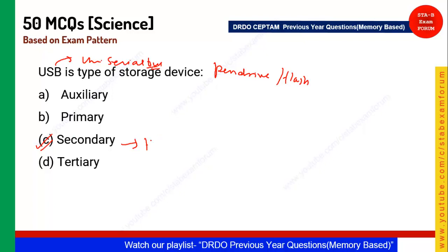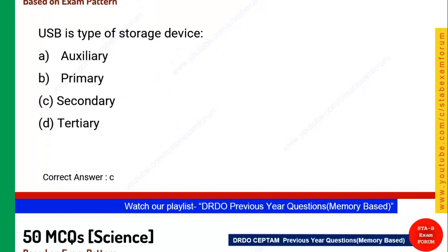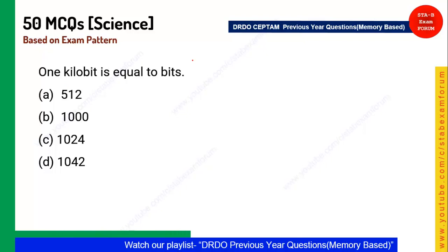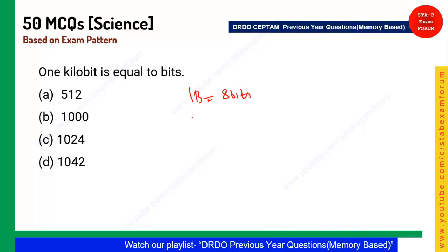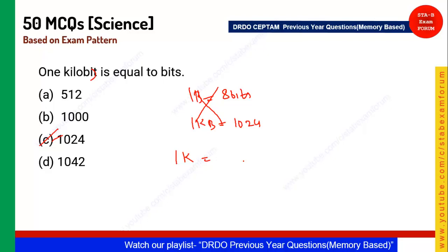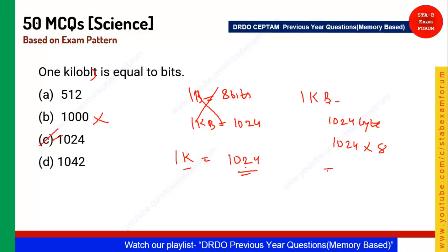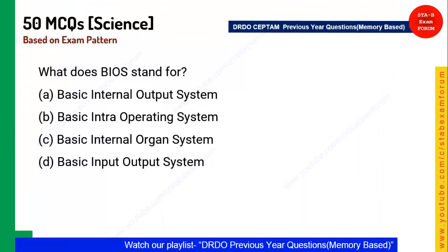Next question: One kilobyte is equal to how many bits? Remember, one byte equals 8 bits. In computers, one kilo equals 1024, so one kilobyte equals 1024 bytes. Since the question asks for bits, 1024 bytes × 8 bits = 8192 bits. Option C is the correct answer.